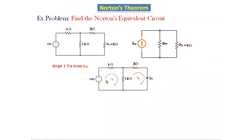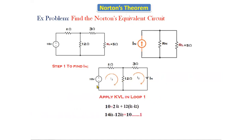Using mesh analysis, I am finding i1 and i2. Assume there are two loops: loop 1 has current i1 and loop 2 has current i2. Applying KVL in loop 1: 10 = 2Ω·i1 + 2Ω·(i1 − i2), since the 2Ω resistor is common to both loops and the currents are in opposite directions. Simplifying: 4·i1 − 2·i2 = 10. This is equation 1.